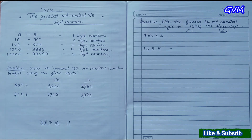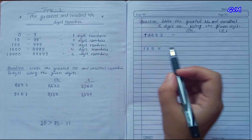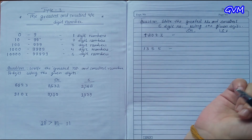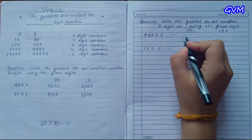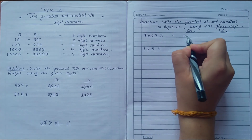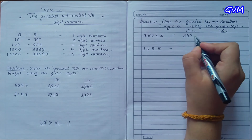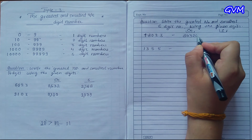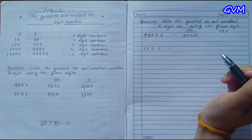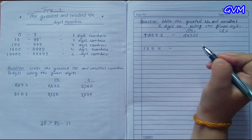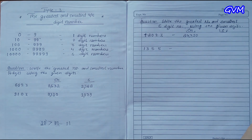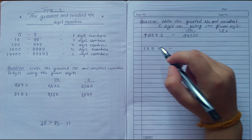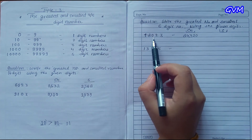Now let's move to five digit numbers. We have five digits: 4, 8, 0, 2, 3. We have to create the greatest and smallest number from them. For the greatest number, arrange them in descending order: write 8, then 4, then 3, then 2, and then 0. Put a comma after three digits — this gives us 84,320 as the greatest number.